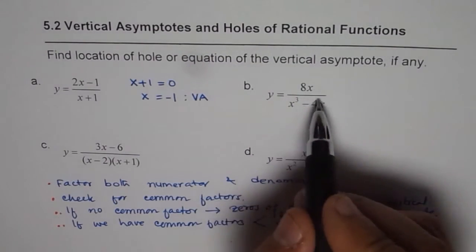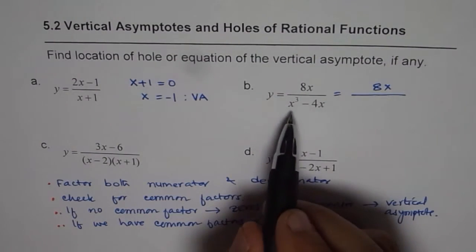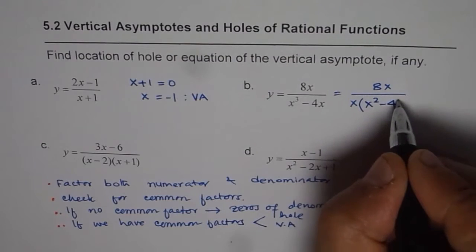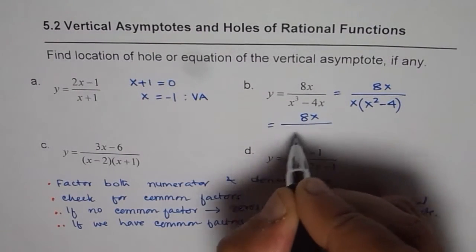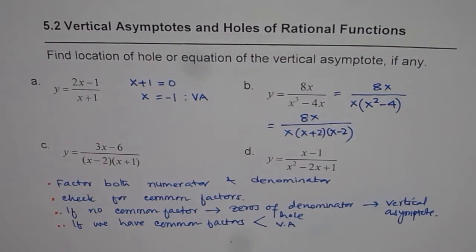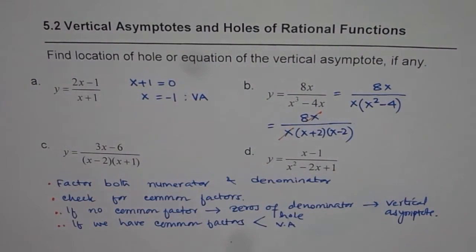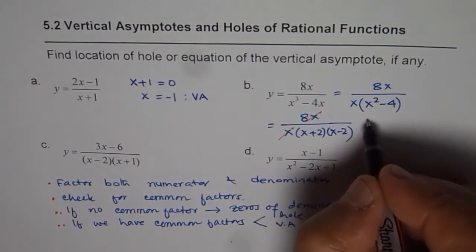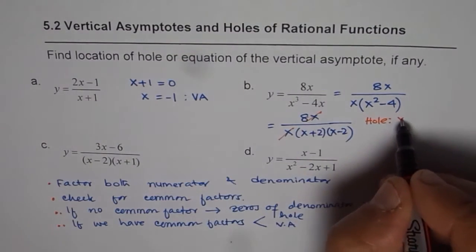Part b is 8x over (x³ − 4x). Let us factor. The numerator 8x is already factored. From the denominator we factor out x to get x(x² − 4), and x² − 4 factors further, giving us 8x divided by x(x + 2)(x − 2). We do have a common factor x in the numerator and denominator, and in this case that common factor gives us a hole at x = 0.